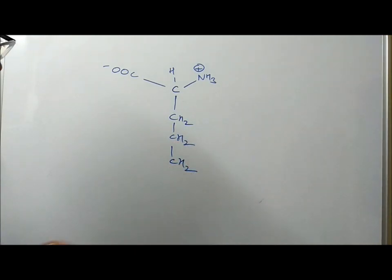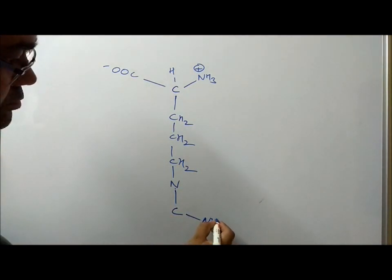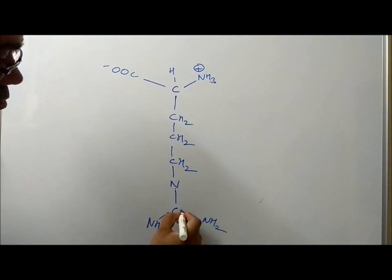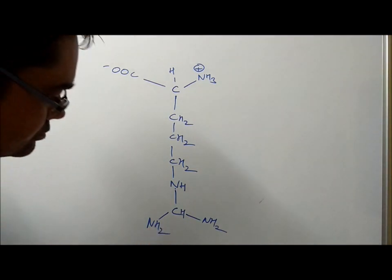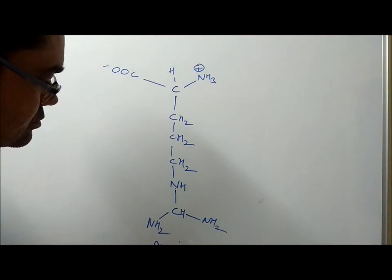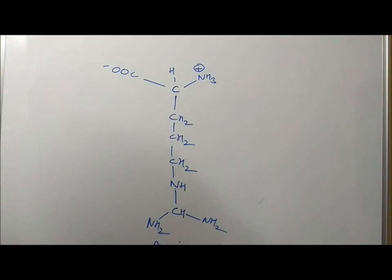Another structure which would be similar to this, a bit complicated, is arginine. So there is a 3-carbon backbone and then there is a nitrogen triangle around the carbon, and this makes the structure of arginine. Just satisfy all the valencies of carbon and nitrogen, and here you get the structure of arginine.